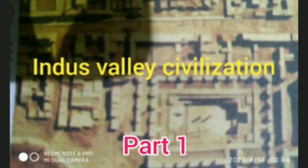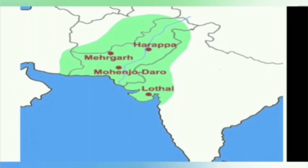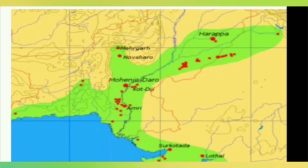Welcome students. Today we are going to start chapter: Indus Valley Civilization. In the Indian subcontinent, the first cities came into being in the valley of River Indus. They were Harappa and Mohenjo-daro. The ruins of Mohenjo-daro were found along the banks of the Indus River, whereas those of Harappa were discovered on the banks of its tributary, Ravi.